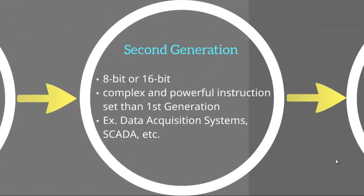By the second generation, 4-bit microcontrollers were obsolete. Systems were now designed using either 8-bit or 16-bit controllers. Another major change was that the instruction set was more complex and powerful. Examples are data acquisition systems and SCADA.